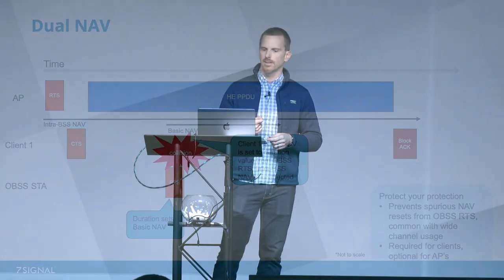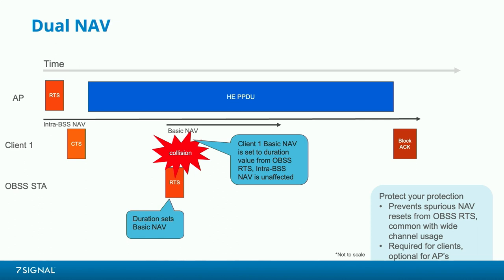Dual NAV solves really three problems. We talked about it being required for uplink OFDMA carrier sense. Another problem that can happen - particularly with primary-secondary OBSS - is that an RTS can show up on the channel from an OBSS station because its secondary channel CCA is not as sensitive, and it could cause a collision and incorrectly change the NAV for stations on that channel. With dual NAV, the basic NAV might be set by the RTS frame but the intra-BSS NAV is not, so we have protection for our NAV protection.